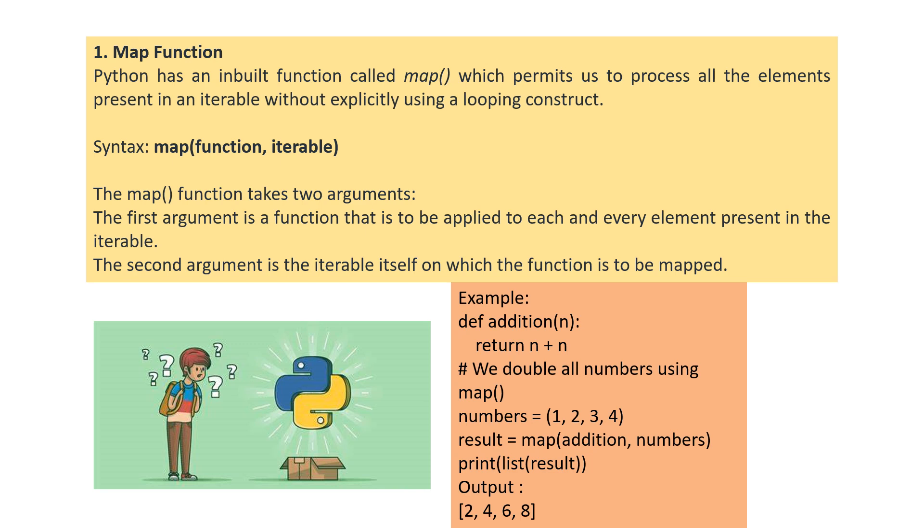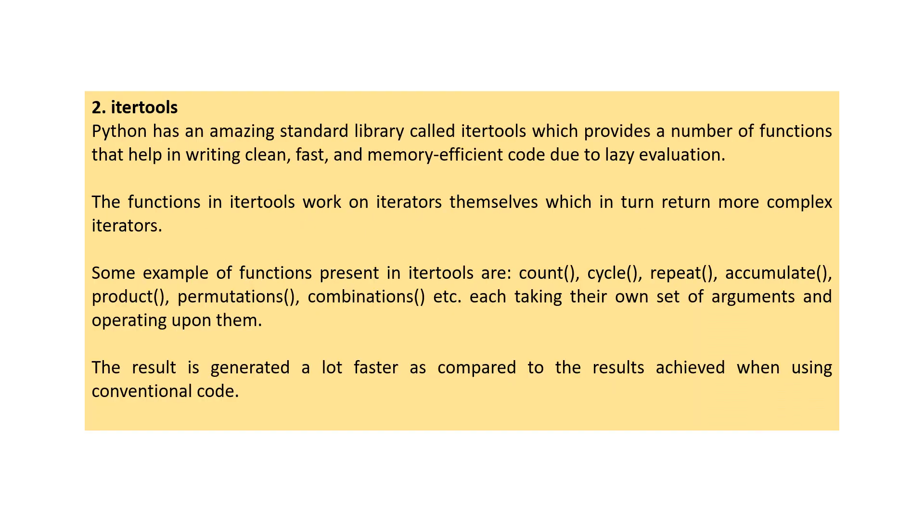This is the first concept. Next important concept is itertools, an amazing standard library which provides a number of functions that help in writing clean, fast and memory efficient code due to lazy evaluation. The functions in this itertools work on iterators themselves which in turn return more complex iterators. Some examples are count, cycle, repeat, accumulate, product, permutations and so on, each taking their own set of arguments and operating upon them. The result here is a lot faster as compared to the results achieved using conventional code for these operations.